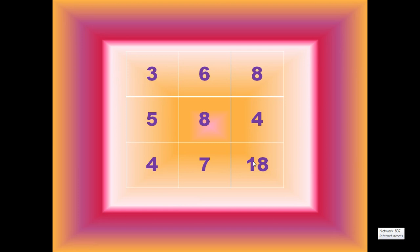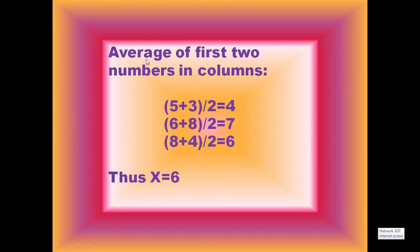You can pause the video and do it. Next, I describe the third logic. The third logic is the average of the first two numbers equals the last column. That is, 5 plus 3 divided by 2 equals 4. 6 plus 8 divided by 2 equals 7. 8 plus 4 divided by 2 equals 6.